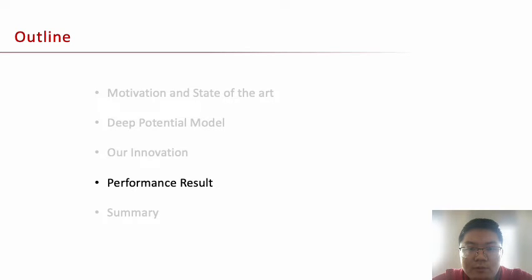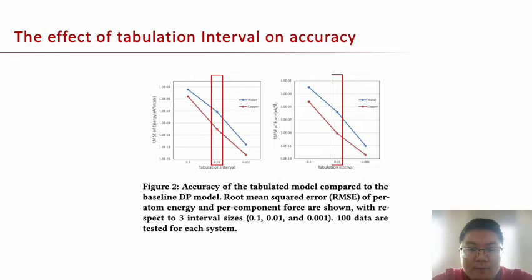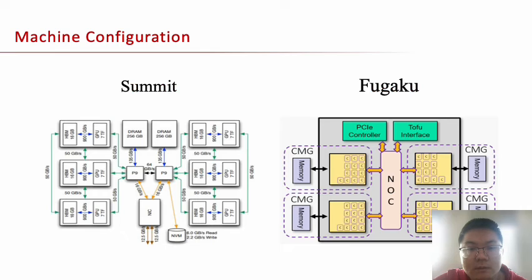Now I will introduce our performance results. This shows the effect of tabulation interval on accuracy. The two figures show the error of energy and force with different tabulation intervals. A smaller interval gives lower error but means a bigger table, so we choose an interval of 0.01 in our implementation. This is our machine configuration. All our work is done on Summit and Fugaku. For Summit, there are two Power9 CPUs and six V100 GPUs on each node, with our main computing tasks running on the V100.